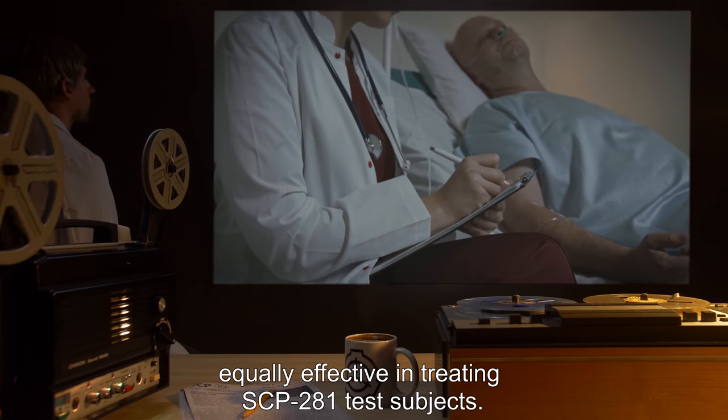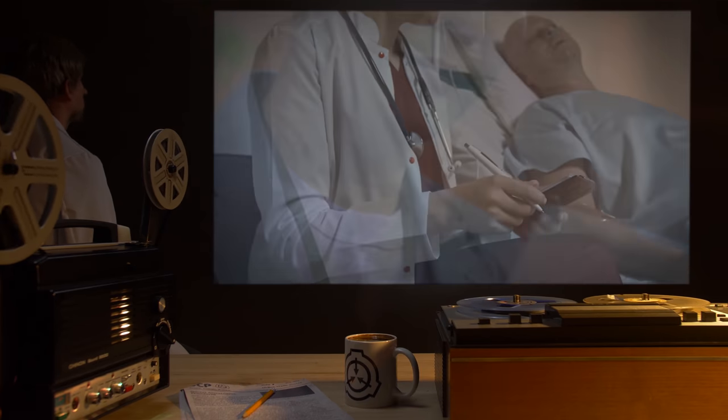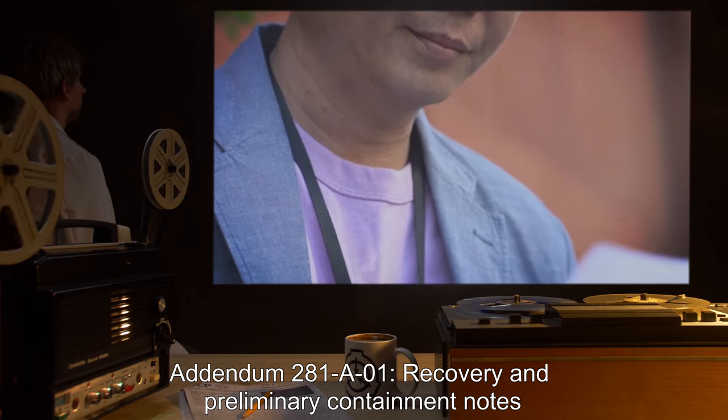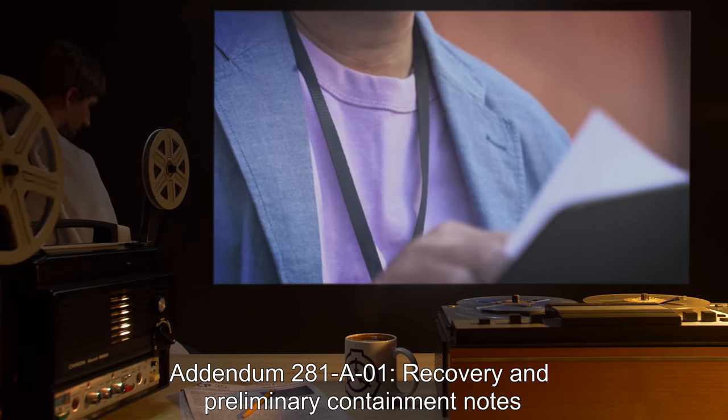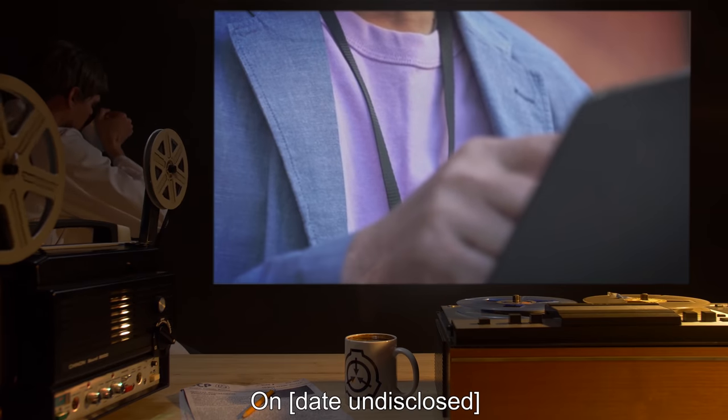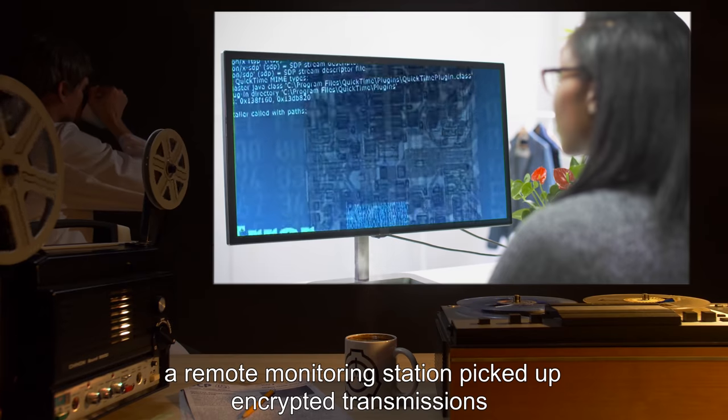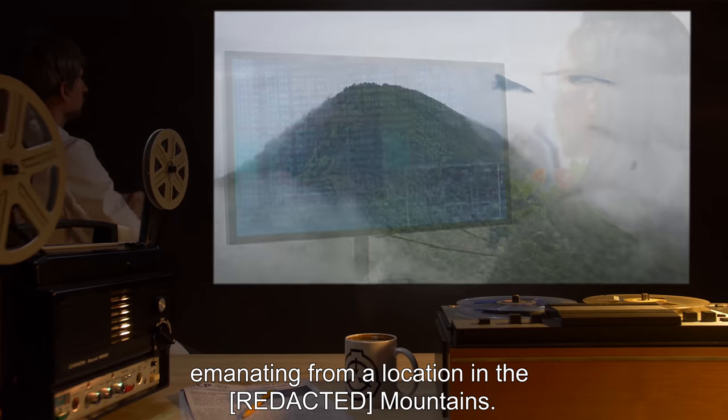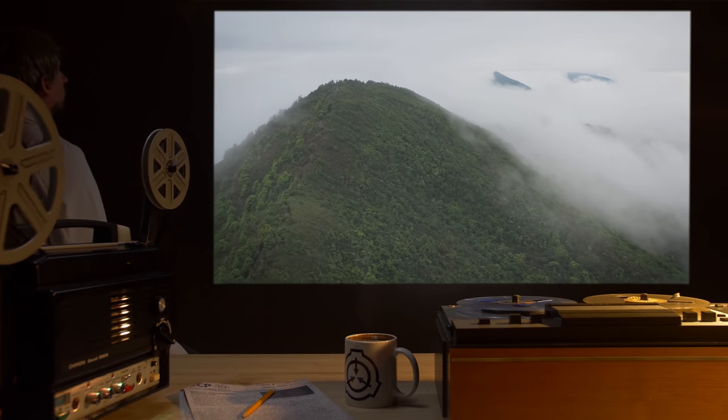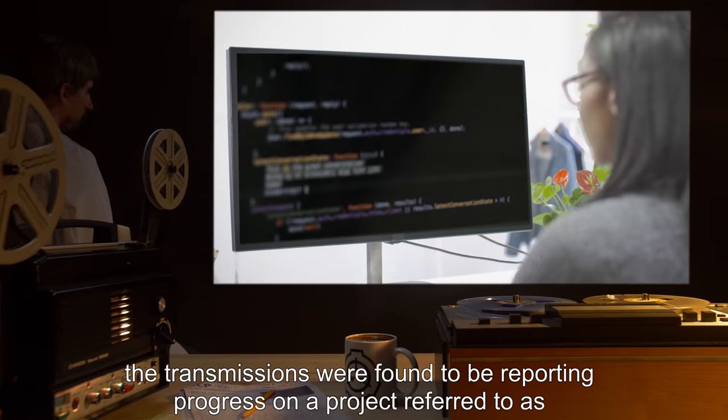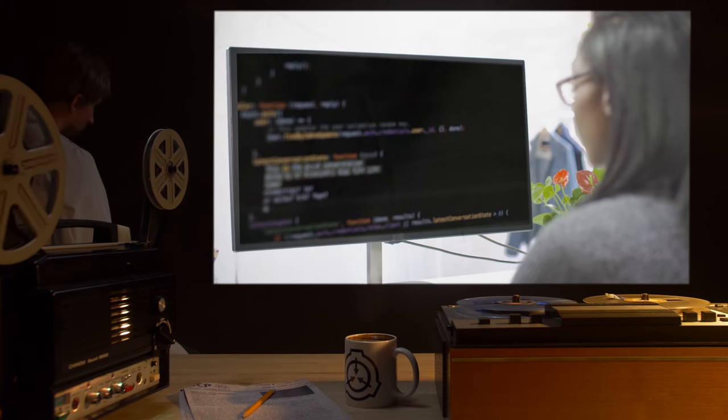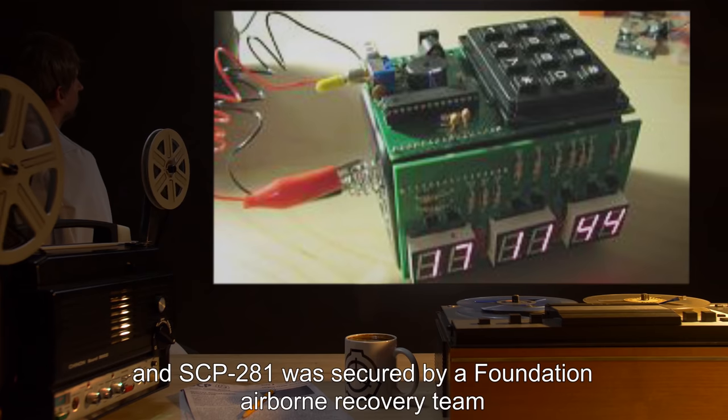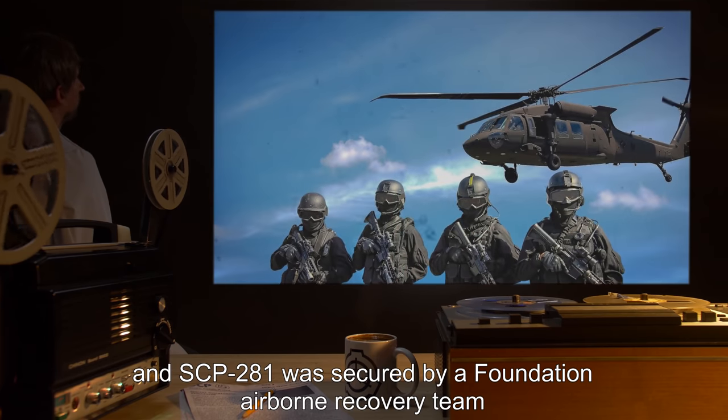Addendum 281-A01: Recovery and Preliminary Containment Notes. On date undisclosed, a remote monitoring station picked up encrypted transmissions emanating from a location in the mountains. After decryption, the transmissions were found to be reporting progress on a project referred to as Full Circle, and SCP-281 was secured by a Foundation airborne recovery team during a raid on a fortified hiker's cabin.